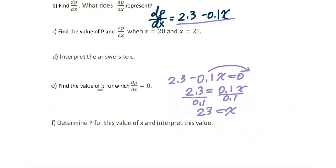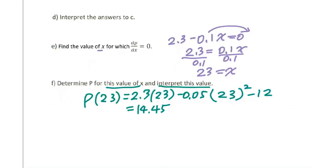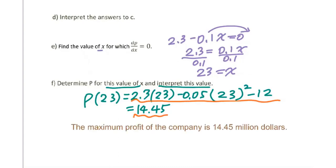For part f, determine P for this value of x and interpret this value. So you get P(23), plug into the original function, get 14.45. When you interpret this value, we know we set the derivative equal to 0, which means we're looking for maximum or minimum. Definitely for this problem, we are looking for the maximum profit of the company is 14.45 million dollars.